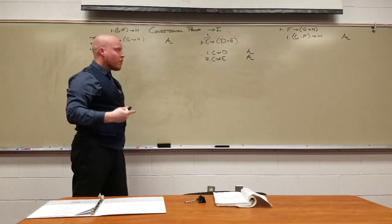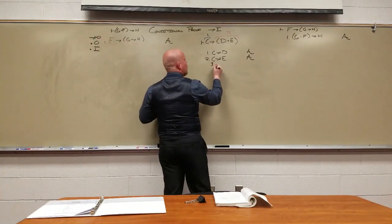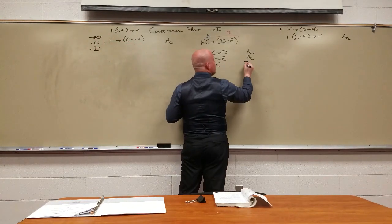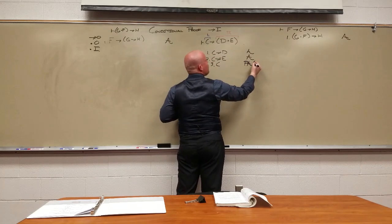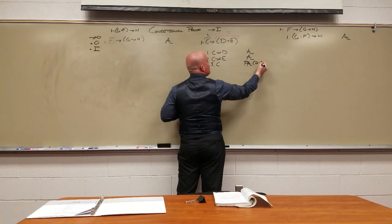We're going to provisionally assume the left and try and get the right. So we get C. That's a provisional assumption. You might want to put over here, what am I trying to get? Now I want to get D and E.